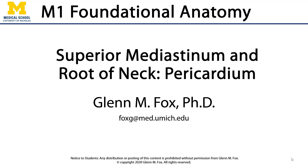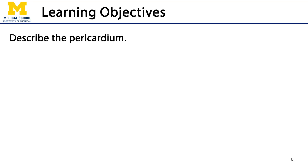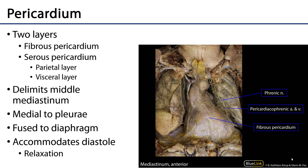Let's talk about the pericardium. The pericardium is a sac that surrounds the heart, which is comprised of two membranes that fall into three layers.